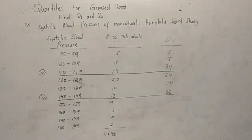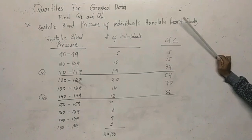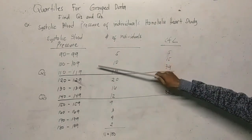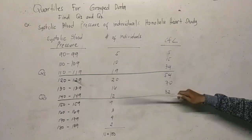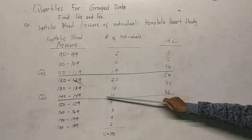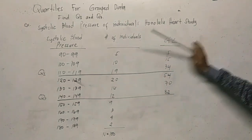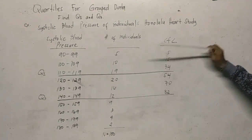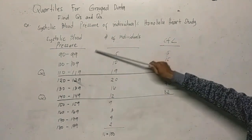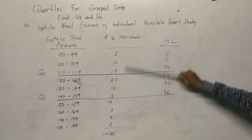For this example, find Q1 and Q3 for the systolic blood pressure of individuals. The classes given are: 90–99, 100–109, 110–119, 120–129, 130–139, 140–149, 150–159, up to 180–189. These are the classes and the corresponding frequencies — the number of individuals involved in each class.